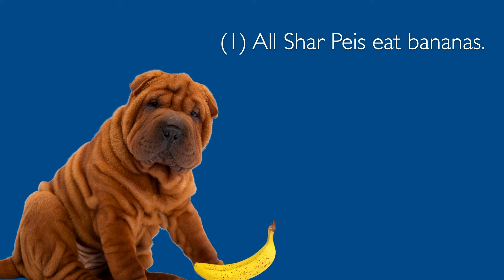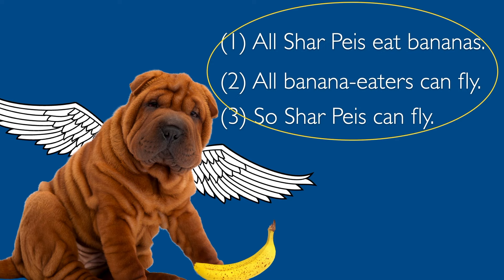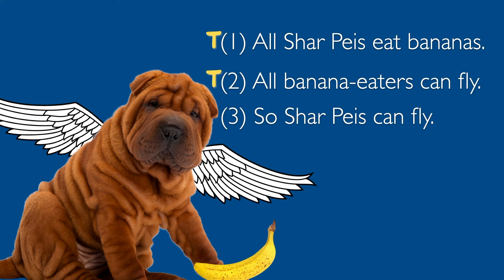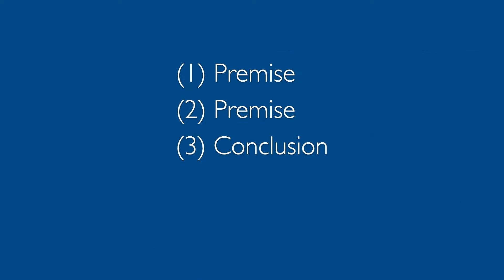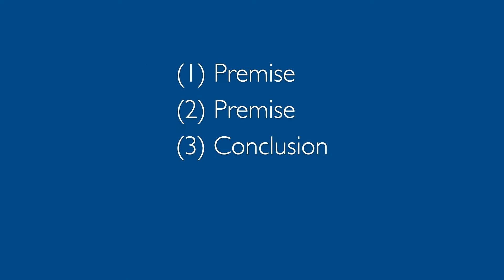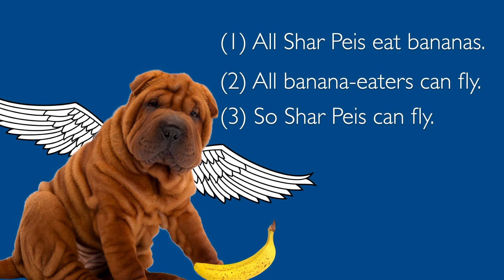Here's one more example: all Sharpays eat bananas; all banana eaters can fly; so Sharpays can fly. Now, all of these claims are ridiculous. But notice something interesting: if these premises were true — and they're not, but if they were — then this conclusion would have to be true. In other words, this is a valid argument. There's absolutely nothing wrong with the reasoning. But there are two ways an argument can go wrong: first, the reasoning can fail — premises might fail in their aim of supporting the conclusion, which we called weak or invalid reasoning. But second, even if the reasoning is flawless, the premises might be false. In that case, you are reasoning flawlessly about falsehoods. That's what happened here — it's perfect reasoning about nonsense.